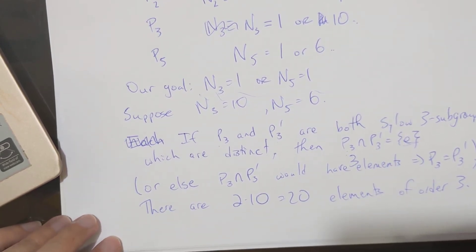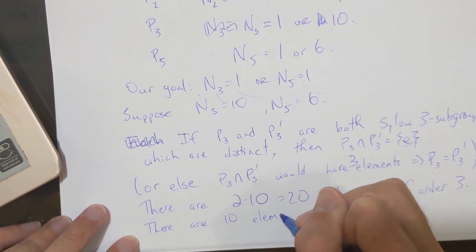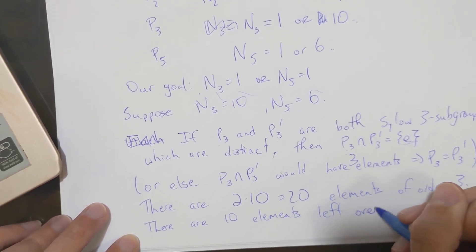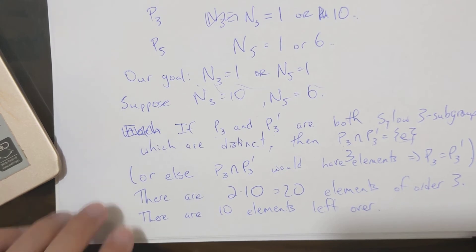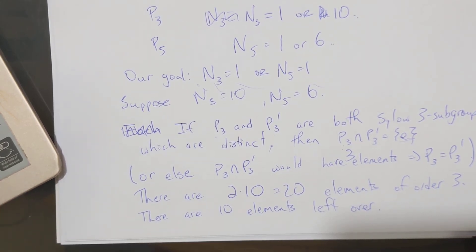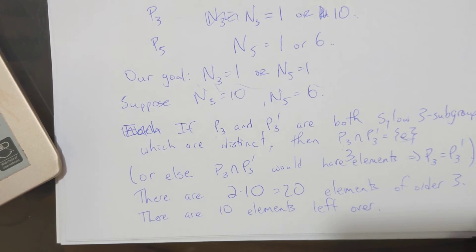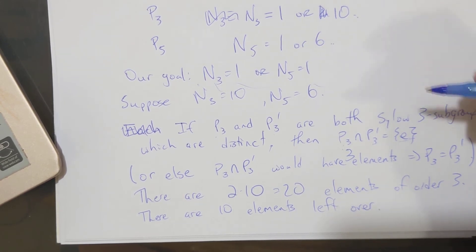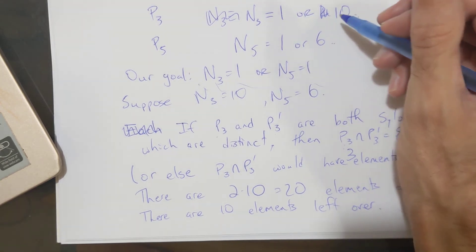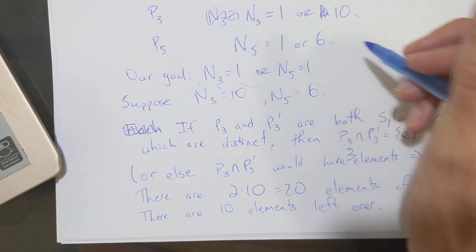Okay. Now that leaves, there are 10 elements left over. That's exactly enough room for basically, a cyclic group of order five and a cyclic group of order two, but, you know, maybe, so basically what this tells us is that we should have N5 equals one, but let's just continue on with our assumption that N5 equals six and just do the same argument.